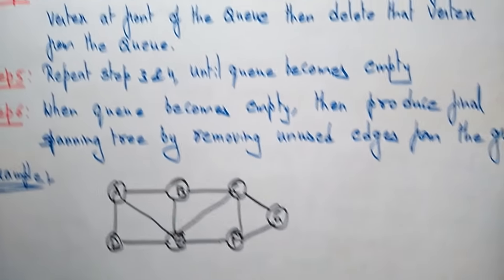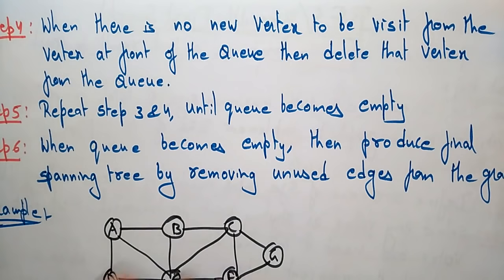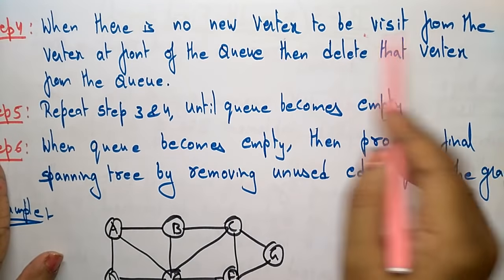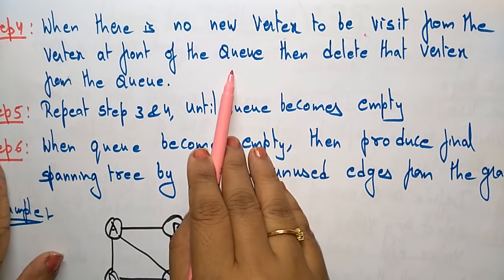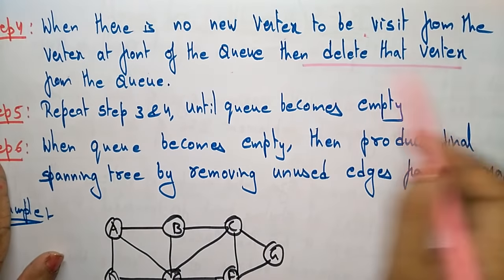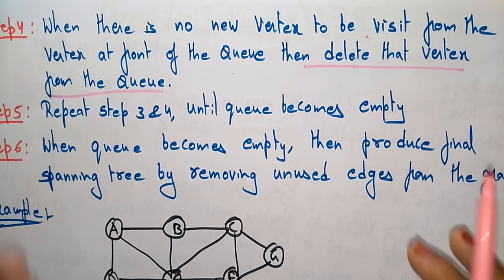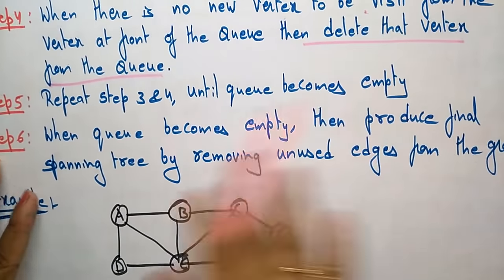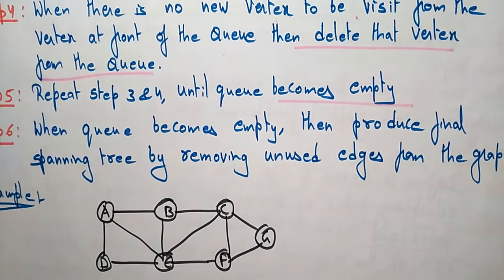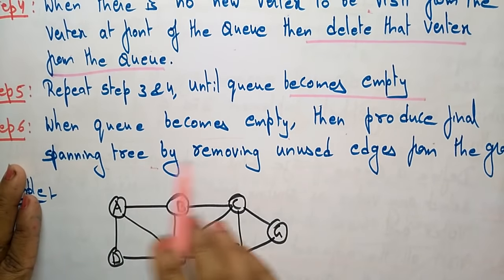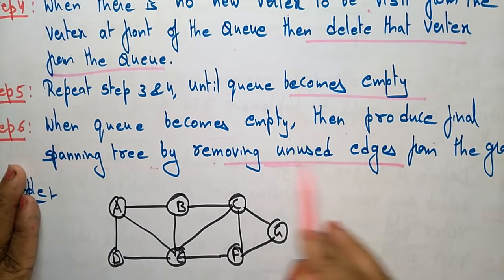Step 4: when there is no new vertex to be visited from the vertex at the front of the queue, delete that vertex from the queue. Repeat steps 3 and 4 until the queue becomes empty. Whenever the queue becomes empty, produce the final spanning tree by removing the unused edges.